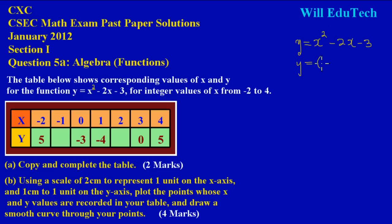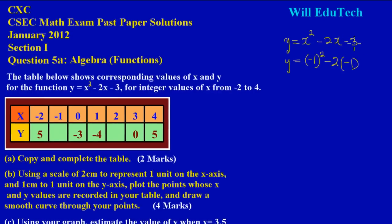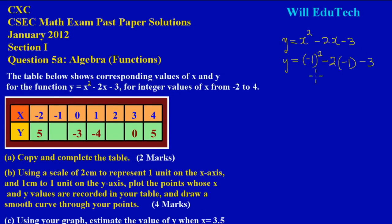Here I have x being squared, so I replace x with (-1) and square it. Then I have -2 multiplying x, so I replace x with -1 again, and bring down the -3 at the end. So I'm calculating: y = (-1)² - 2(-1) - 3.